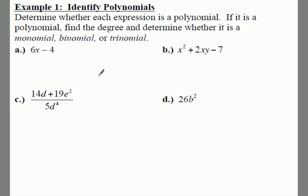So we look at number one, 6x - 4. This looks pretty good. They're separated by a minus sign, and there are two of them. So we're going to say this is a binomial.